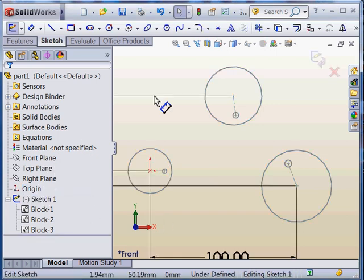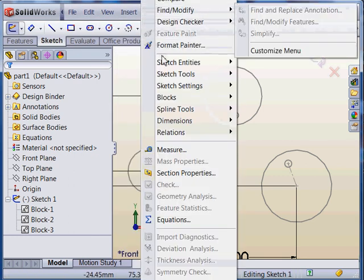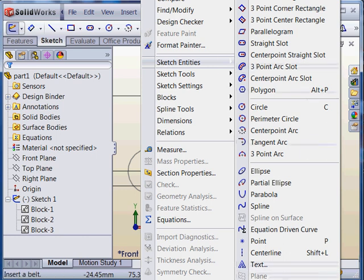First we're going to start off by editing the sketch, and you'll find the tool under Tool Dropdown, Sketch Entities, Belt and Chain.